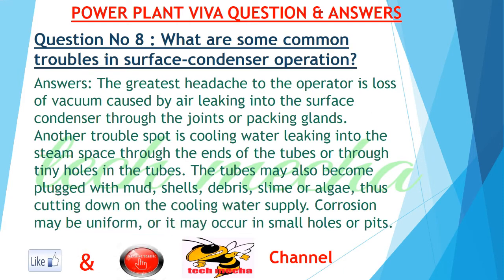Question number 8: What are some common troubles in surface condenser operation? Answer: The greatest headache to the operator is loss of vacuum caused by air leaking into the surface condenser through the joints or packing glands. Another trouble spot is cooling water leaking into the steam space through the ends of the tubes, or through tiny holes in the tubes. The tubes may also become plugged with mud, shells, debris, slime, or algae, thus cutting down on the cooling water supply. Corrosion may be uniform, or it may occur in small holes or pits.